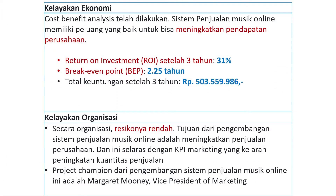Selanjutnya ada kelayakan ekonomi. Ada Return on Investment (ROI) dan ada BEP. ROI ini adalah rasio laba bersih — dihitung, misalnya setelah 3 tahun berapa persen ROI-nya. Ternyata ROI-nya 31 persen. Kemudian BEP — BEP ini hubungannya dengan balik modal. ROI ini patokannya adalah bunga bank.